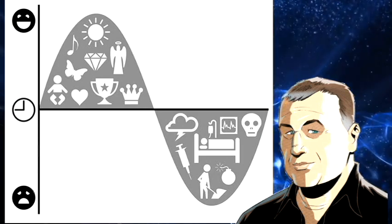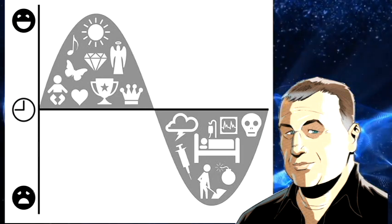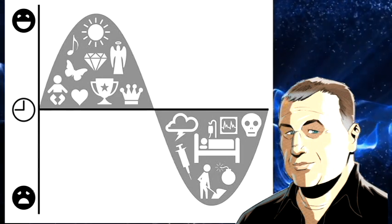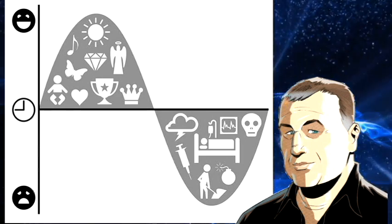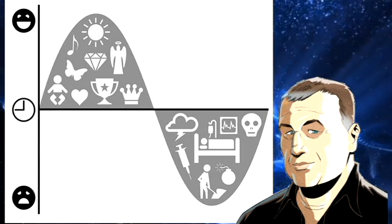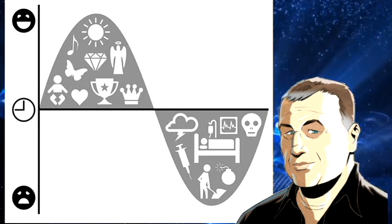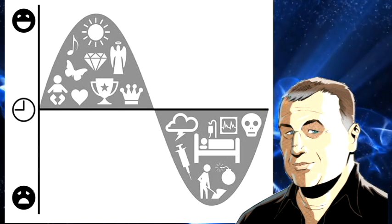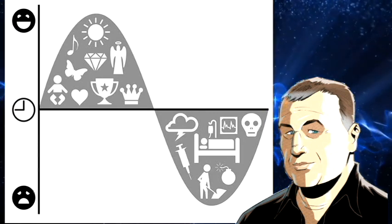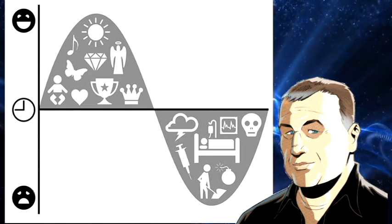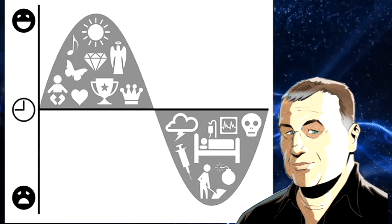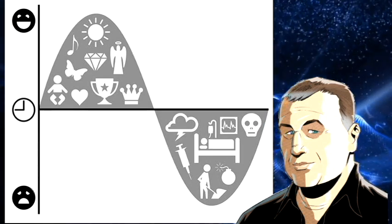Anything north of the middle line is good things that can happen to the character. The further north you get, the better things are. Anything below the line is bad things, and the line across is time. So the starting point is the start of your story and the ending point is the end of the line, and where the character is at that point determines whether good things are happening to them or bad things. That's it in a nutshell.